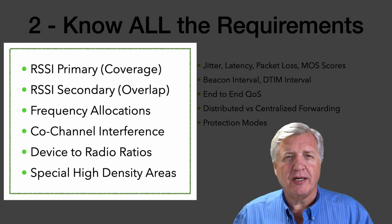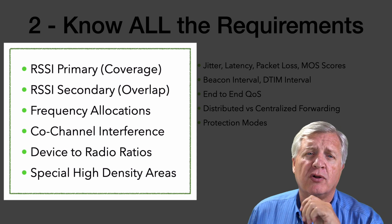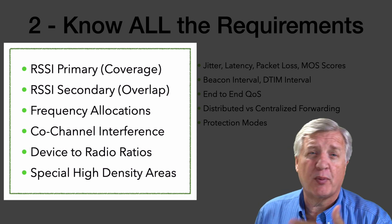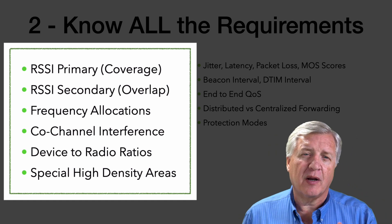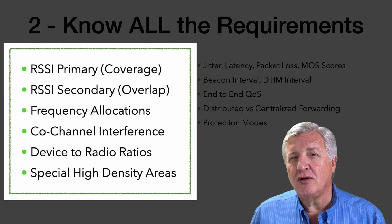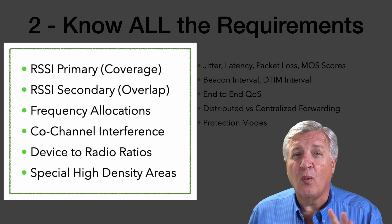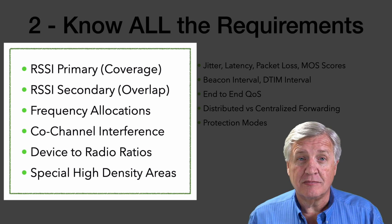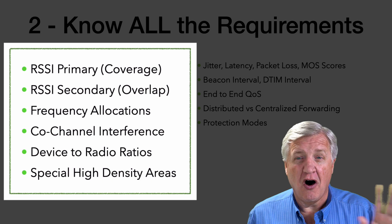Device-to-radio ratios — there aren't a lot of devices that specify this. When you buy a Chromebook, it doesn't say no more than 17 Chromebooks per radio or per AP. The things that really need that are usually voice over IP handsets, because of the way they use the PHY and QoS. Figure out what your device is, what it specifically needs, and make sure you give it what it wants — primary, secondary, co-channel interference, data rate, SNR, all of the things.